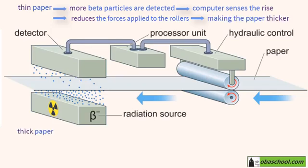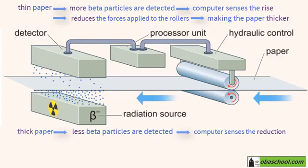When the paper is too thick, the opposite happens. The detector will detect less beta particles and the computer will respond to the reduced count rate and increases the force applied to the rollers, rendering the paper thinner.